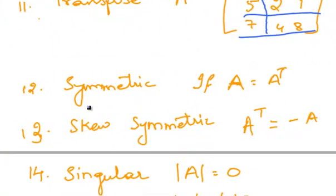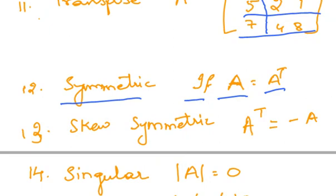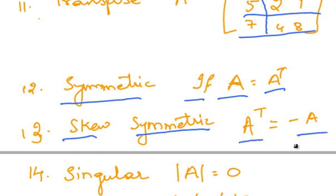Symmetric matrix — if A is equal to A transpose, then that matrix is called a symmetric matrix. Skew symmetric matrix — if A transpose is equal to minus A, then that matrix is said to be skew symmetric.